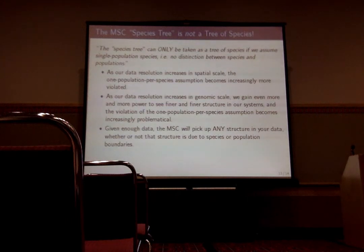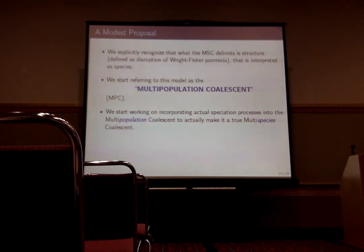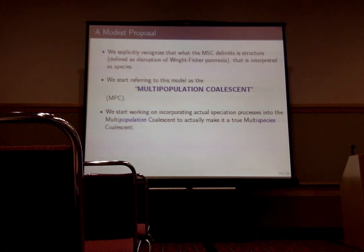Given enough data, the multi-species coalescent will pick up any structure in your data, whether it's due to species, populations, or something else. So this is the way forward: we have to acknowledge that what the multi-species coalescent is tracking is structure, and it requires corroborating data, evidence, analyses, and assumptions — a priori or a posteriori — to go from that to species. I suggest maybe we start calling it the 'multi-population coalescent,' to emphasize that the species tree is actually a tree of populations. And of course, the natural next step is to incorporate speciation processes directly into the model.